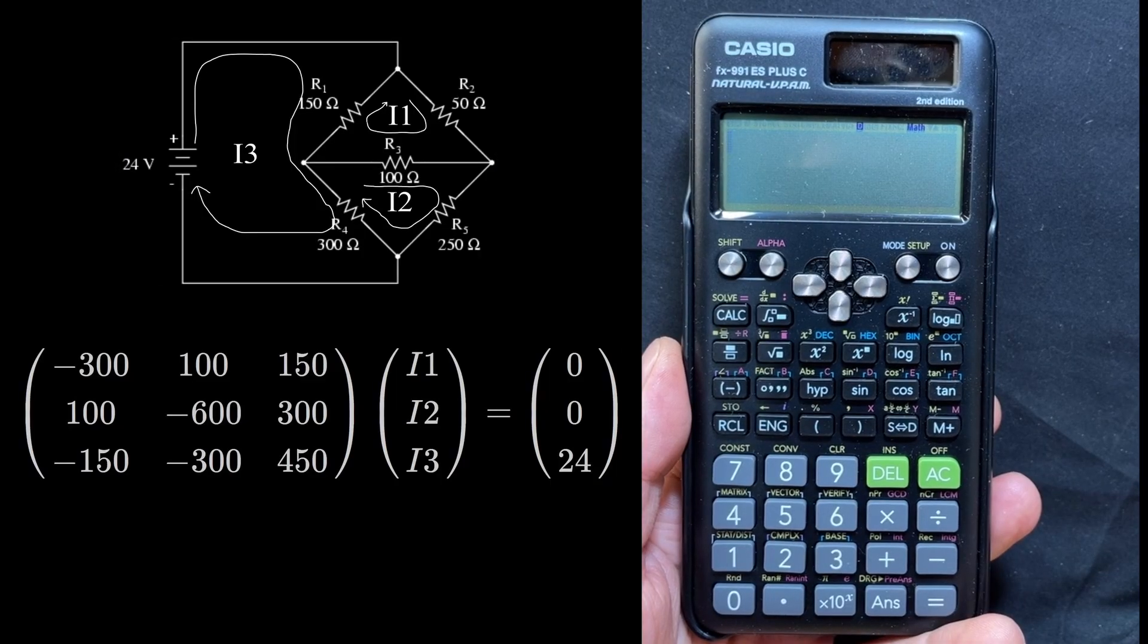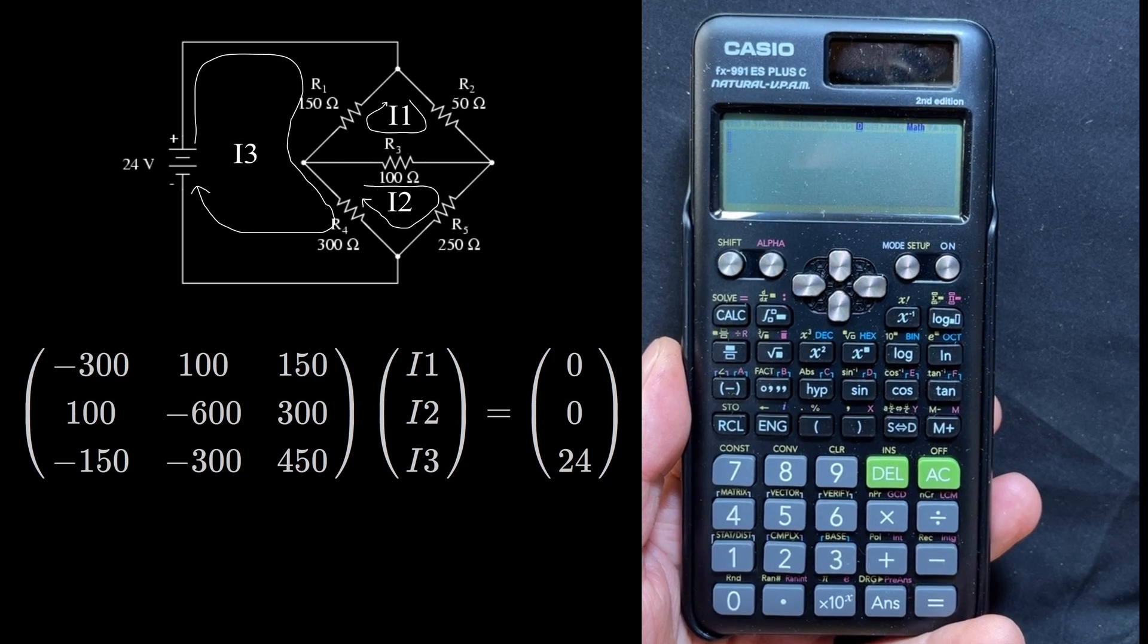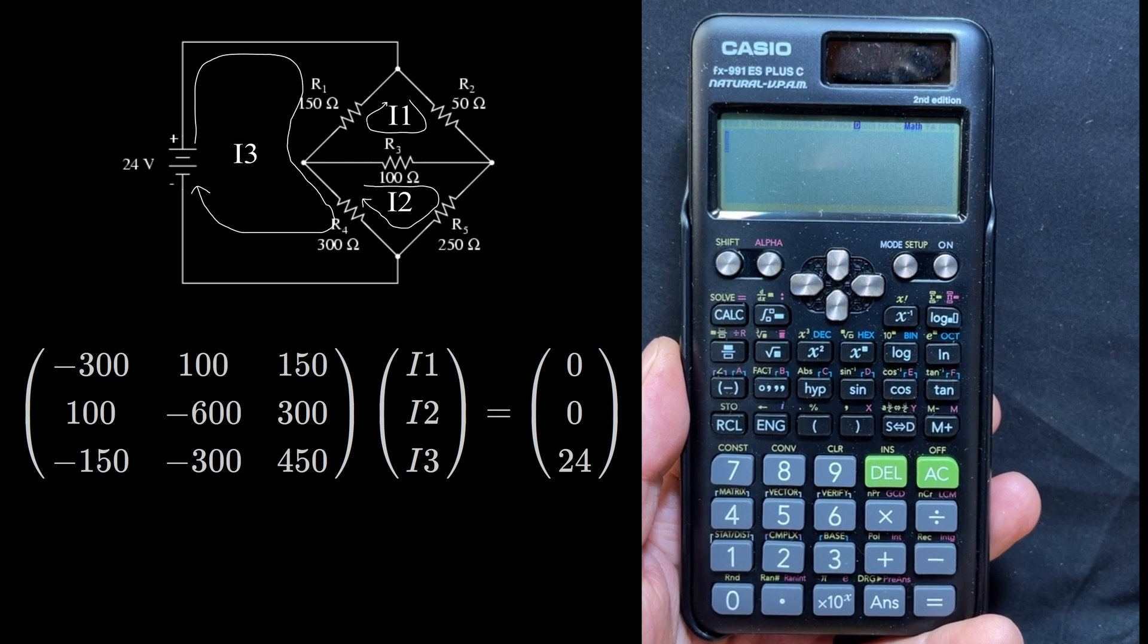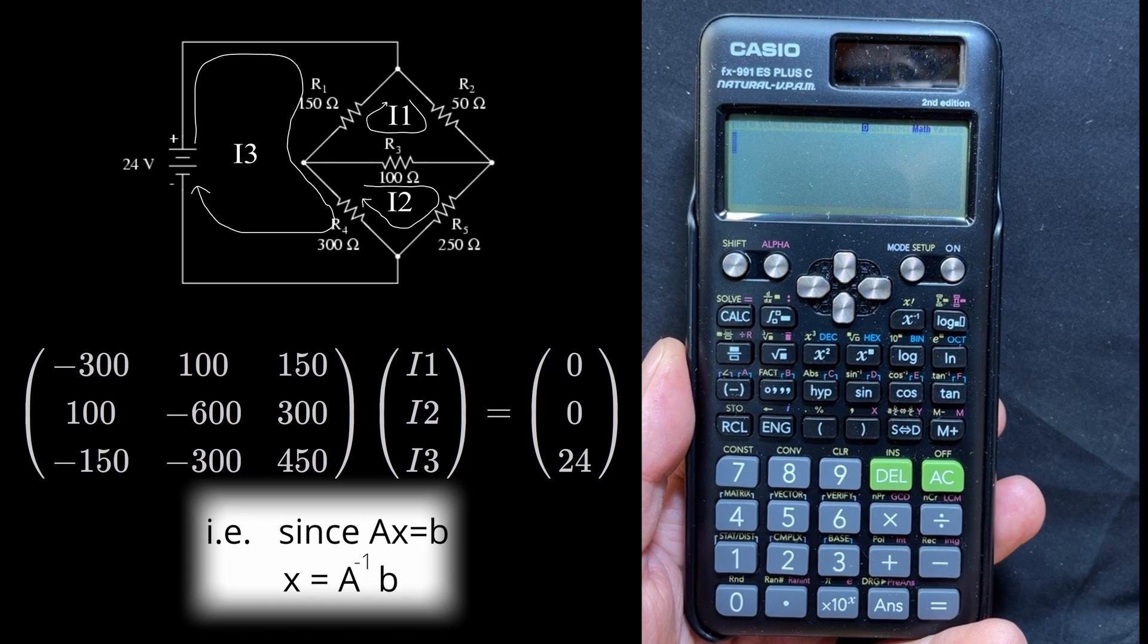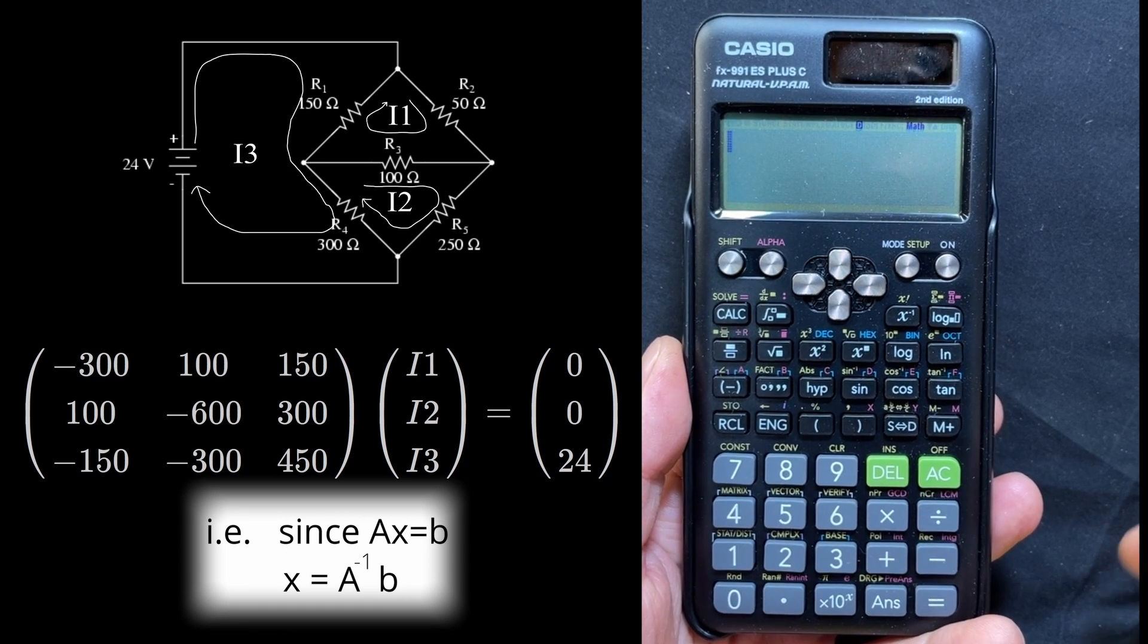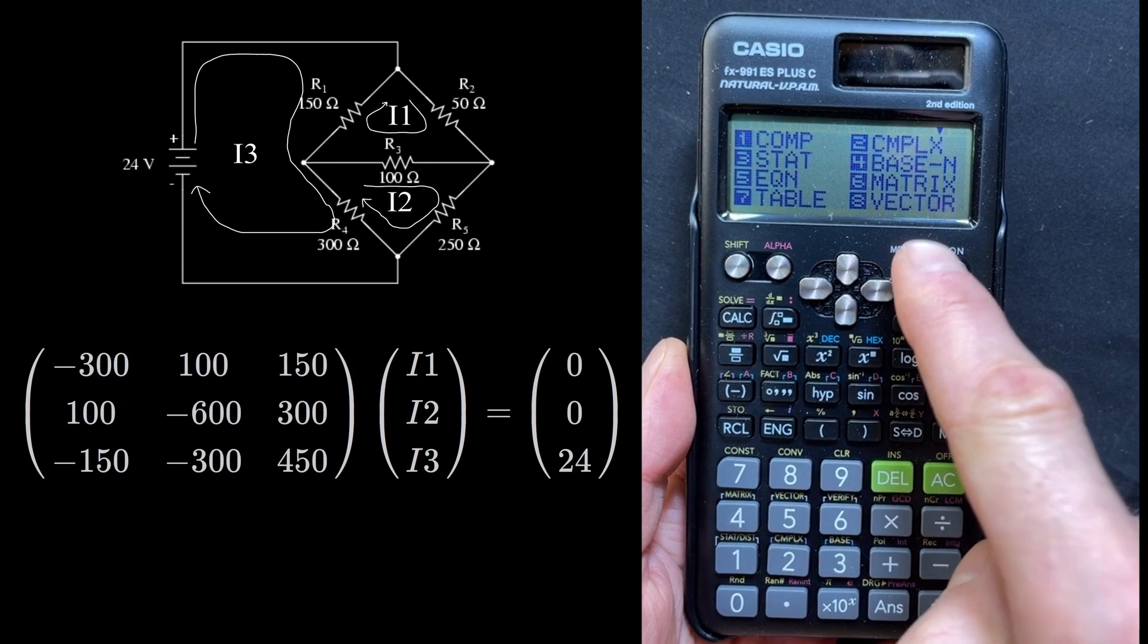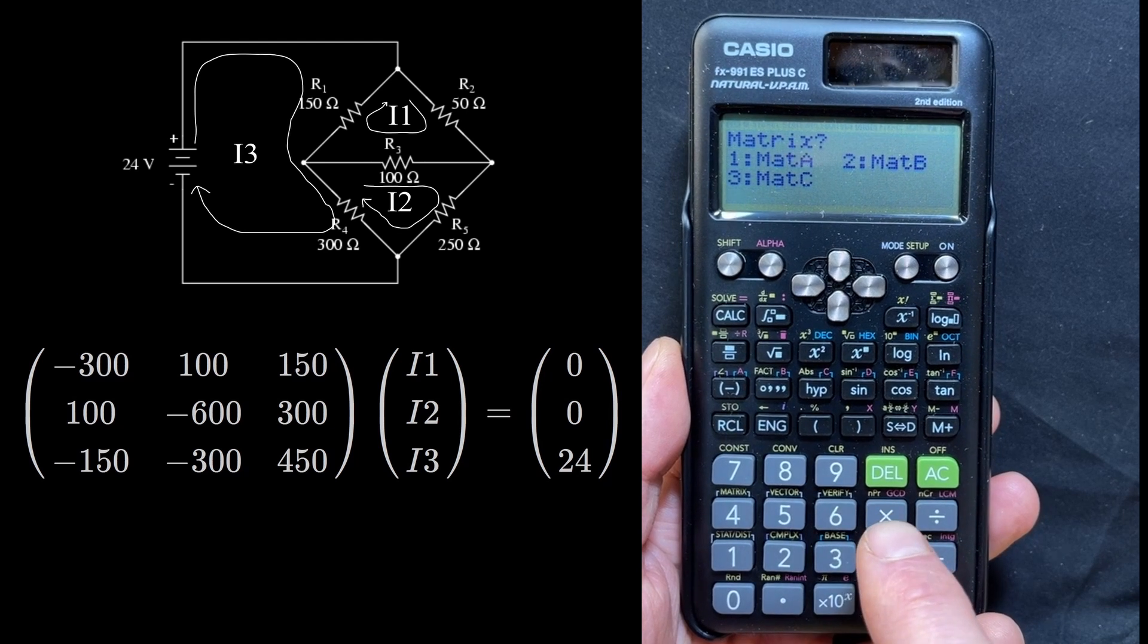This first method of solving a linear equation is a little bit more involved. It's going to involve matrices. What we're going to do is set up matrix A, set up matrix B, take the inverse of A, and then multiply it by B to get the answer. So the first thing we need to do is change to the matrix mode. We hit the mode button, and then 6 to get us into the matrix mode.